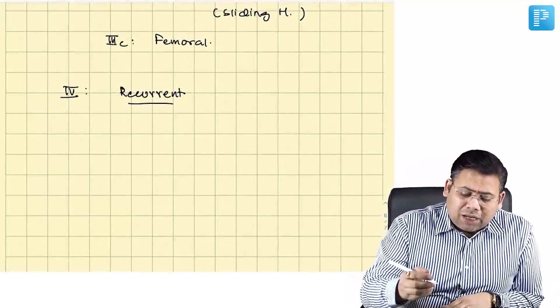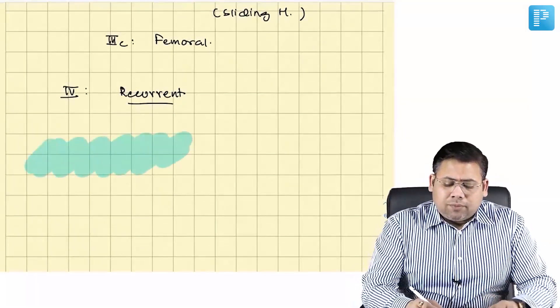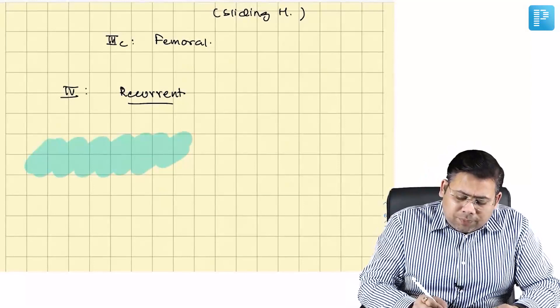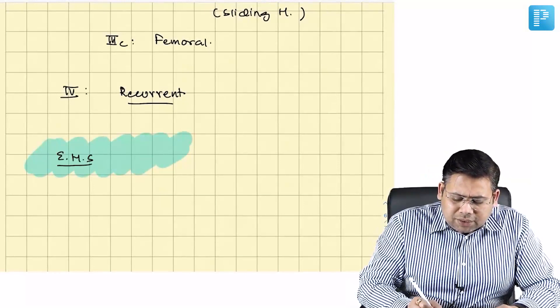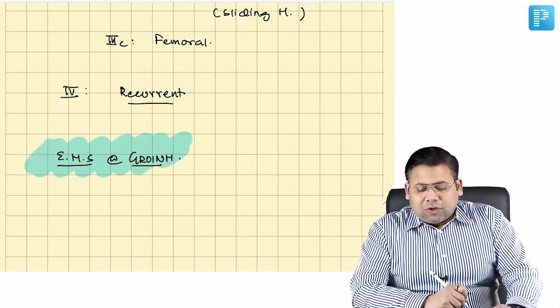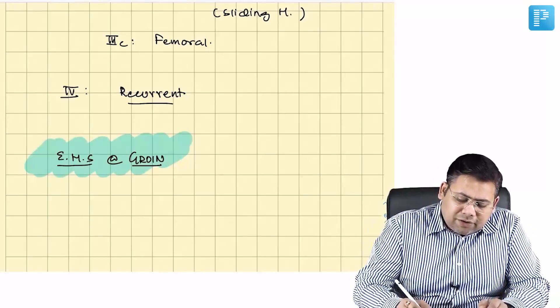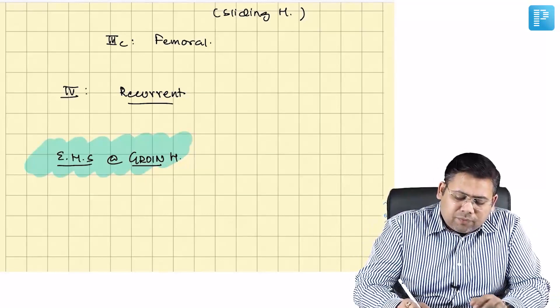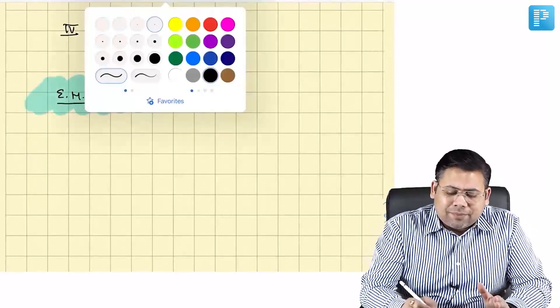We also have a classification system from the European Hernia Society — the EHS system for groin hernias. This is again very very important. EHS stands for European Hernia Society.